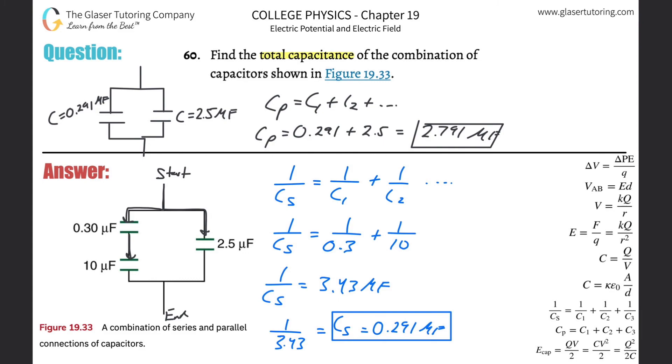For capacitors it's going to be flipped on you when you get to resistors, so just keep that in mind. Now basically what I found is that this whole complicated arrangement of capacitors is identical to this one single capacitor with a value of 2.791 microfarads. And that's the answer.